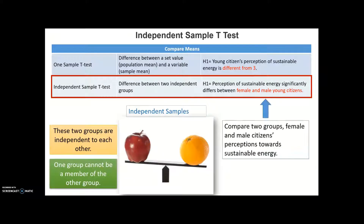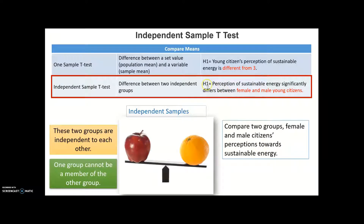By using independent sample t-test, we can compare two groups — for example, whether female and male citizens' perception towards sustainable energy is different or not. A typical alternative hypothesis for the independent sample t-test should be like that.